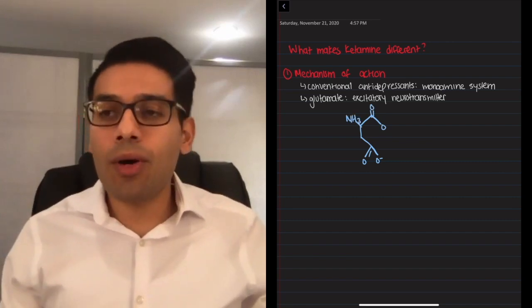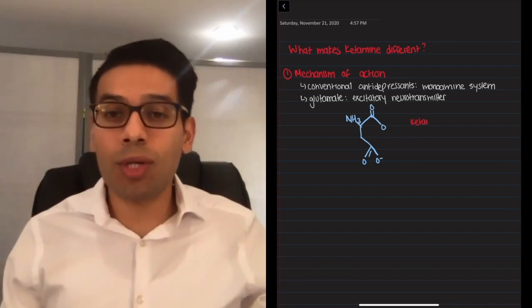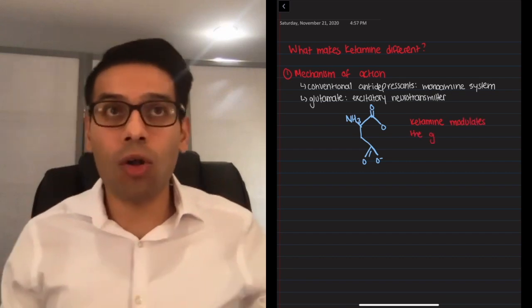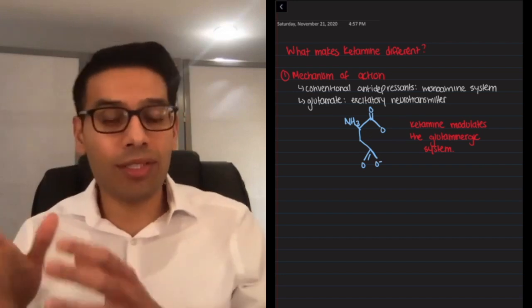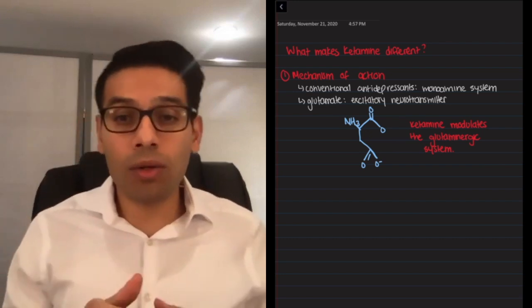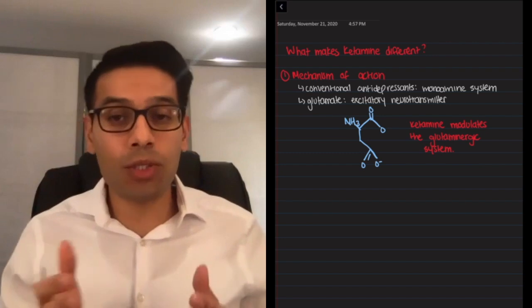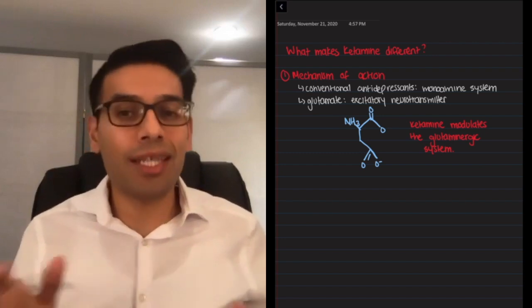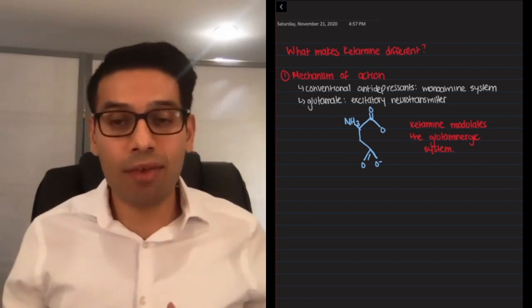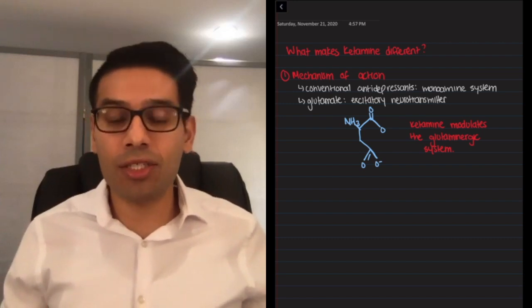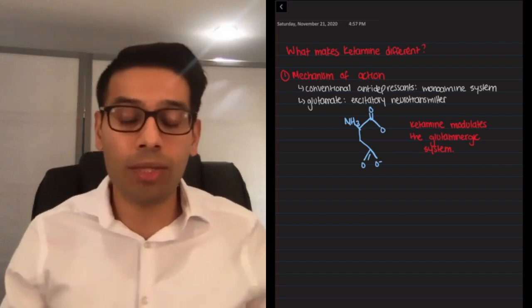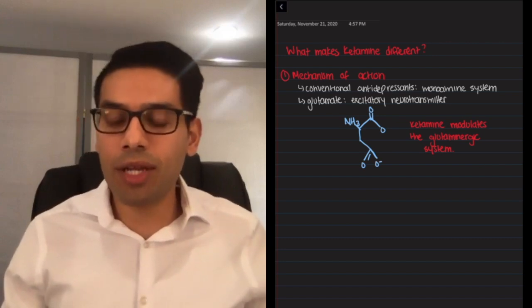So as you can imagine, for people that have tried a bunch of different medications that all affect serotonin, norepinephrine, and dopamine, the chances of yet another medication working on the same system gets lower and lower. Whereas with ketamine, because it works on glutamate, it really kind of resets the score and your chance of having benefit from it is still fairly good because it's not really working on serotonin, norepinephrine, or dopamine, but this other key neurotransmitter.